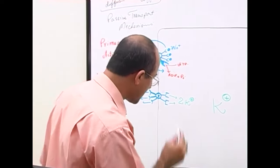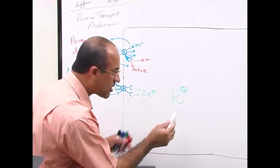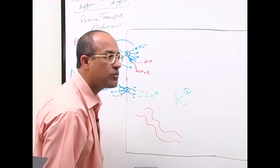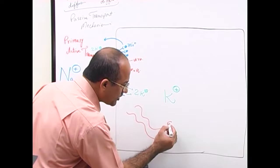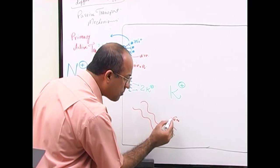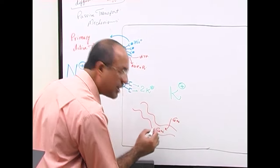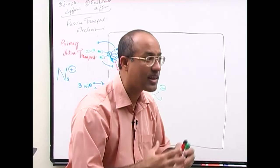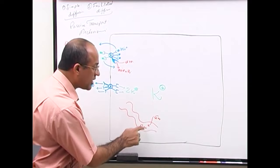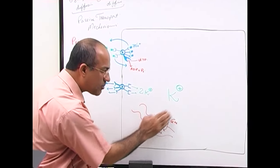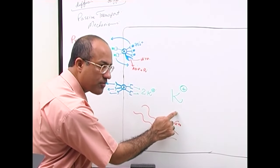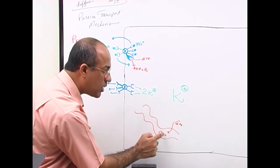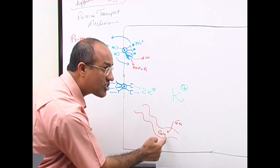Another example of primary active transport: within cells there is a network of tubes called the endoplasmic reticulum. If there is a lot of calcium in the cytoplasm, calcium must be pumped actively into the endoplasmic reticulum. These tubes are full of calcium, and whenever calcium goes out of the endoplasmic reticulum, it must be pumped back.